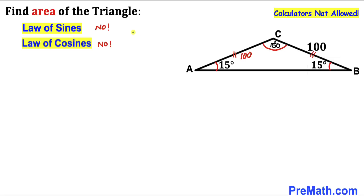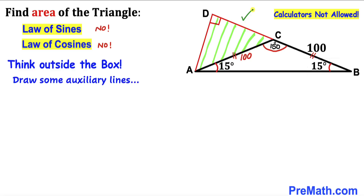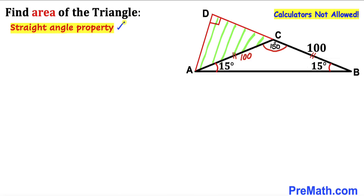Since we are not using the law of sines or the law of cosines, we will think outside the box and draw auxiliary lines. I have constructed right triangle ADC by extending line BC to point D and connecting points A and D. By the straight angle property, the whole straight angle is 180 degrees, and since angle ACB is 150 degrees, the remaining angle ACD is 30 degrees.